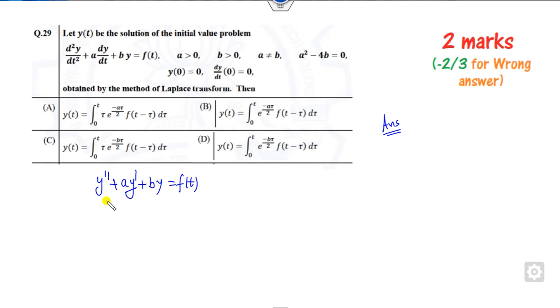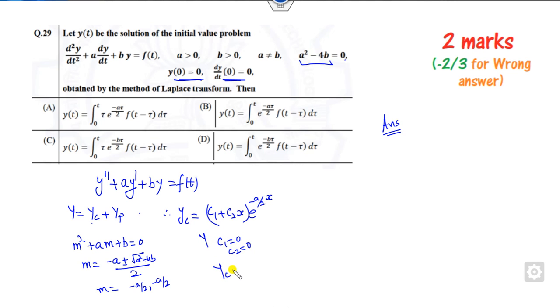So what will happen if you solve this without the Laplace transformation? Your solution will be y complement plus y particular. How you can find the y complement is here. The roots are minus a/2, minus a/2. So whenever roots are the same, the y complement is c1 plus c2 x times e raised to power minus a/2 x. That is a solution corresponding to y c, but initial values both are 0. So if you substitute here you will get c1 as 0, c2 is 0, so y c will be 0.